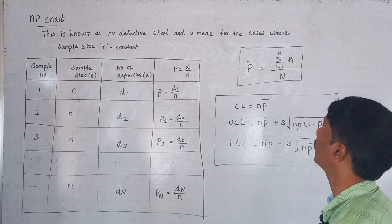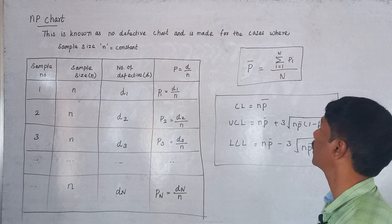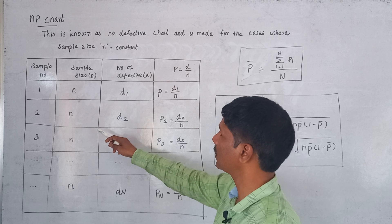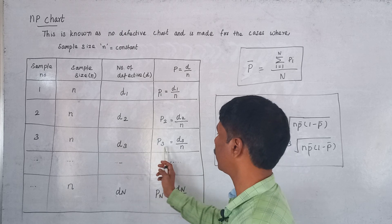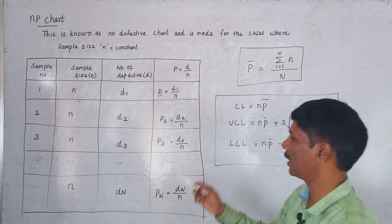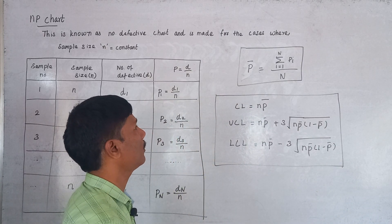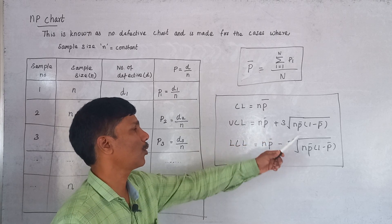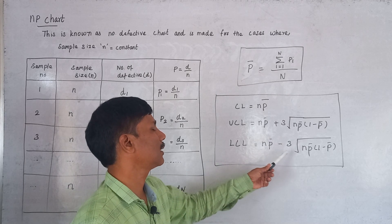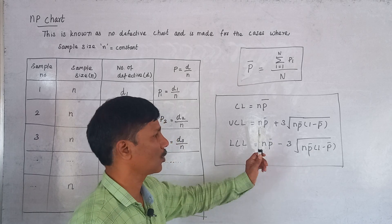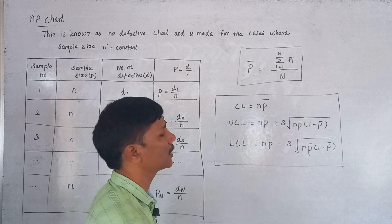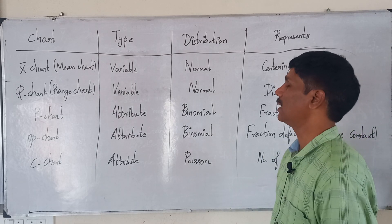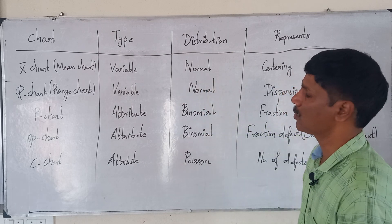The NP chart is used in cases where the sample size N is constant. For each sample: P1 = D1/n, P2 = D2/n, P3 = D3/n, ..., Pn = Dn/n. P-bar = (sum of P_i from i=1 to n) / n. The center line is N * P-bar. The upper control limit is N*P-bar + 3 * sqrt(N * P-bar * (1 − P-bar)); the lower control limit is N*P-bar − 3 * sqrt(N * P-bar * (1 − P-bar)).